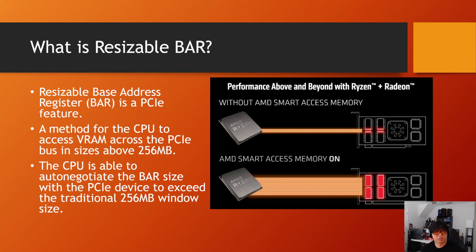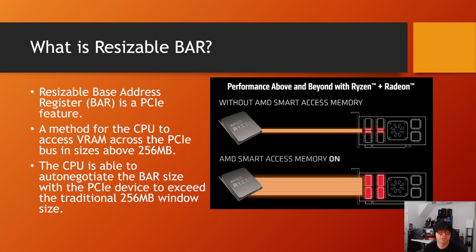To answer the question of what resizable bar is — because people often wonder should I turn it on or off — it is a PCIe feature that has been out for several years. Essentially, it allows the CPU to auto-negotiate the base address register — that's what the BAR acronym stands for — so it can allocate the entire frame buffer above four gigabytes. Without it, the CPU had to address the VRAM in 256 megabyte chunks, whereas with resizable bar it can auto-negotiate to much higher sizes.